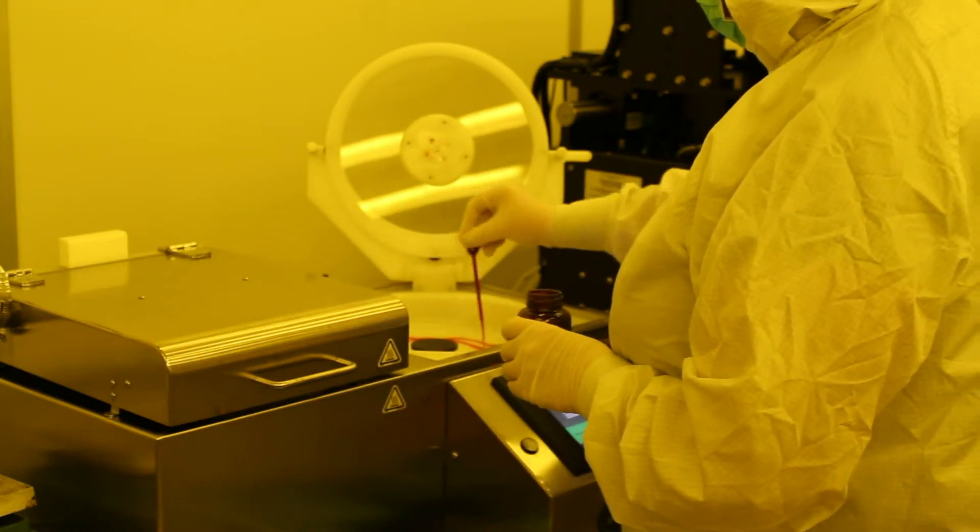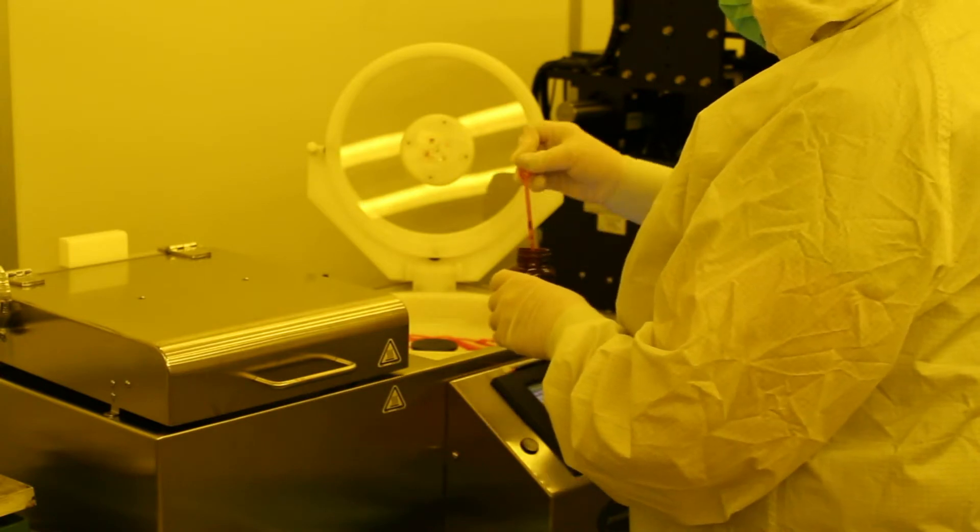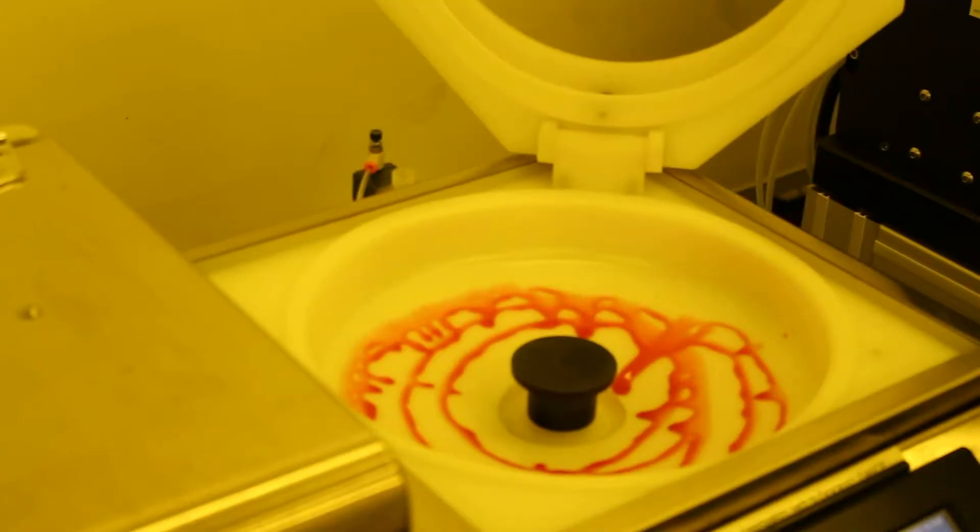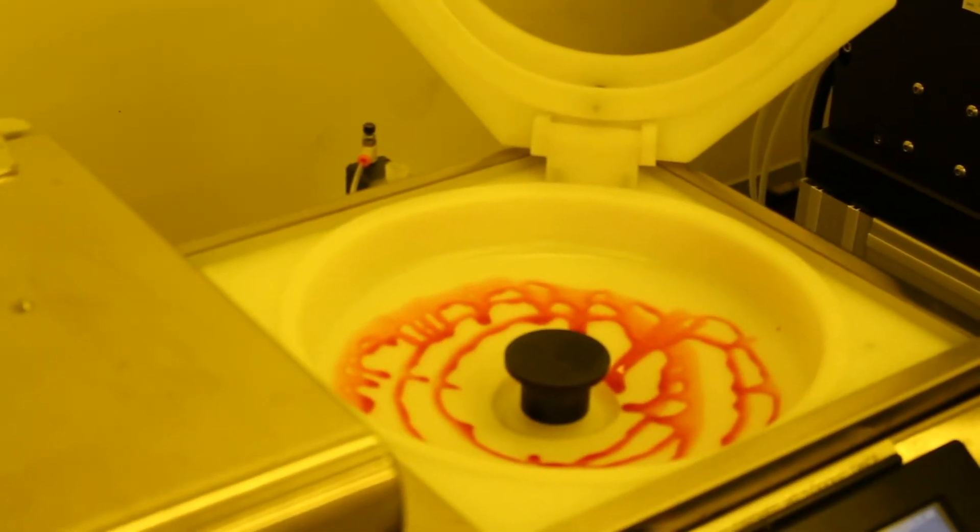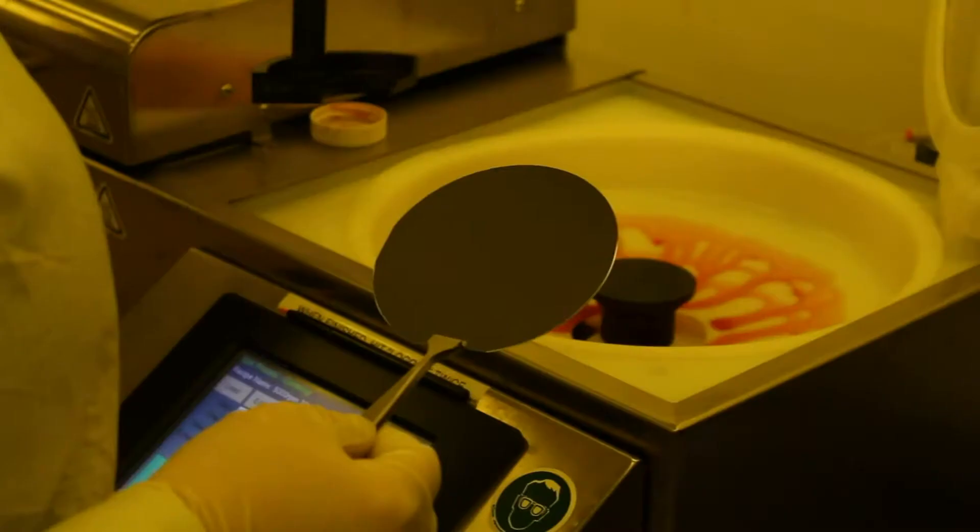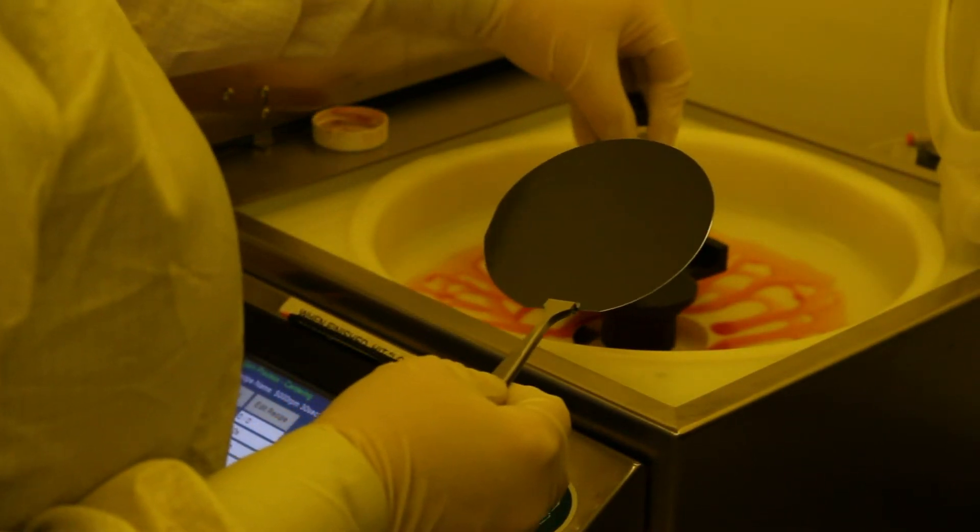Once the bowl is in place and the chuck is attached to the spindle on the coater, we put a small amount of resist inside the bowl in order to create a solvent-rich environment. This helps the laminar flow of the resist coating so that we get a nice uniform film across the wafer.